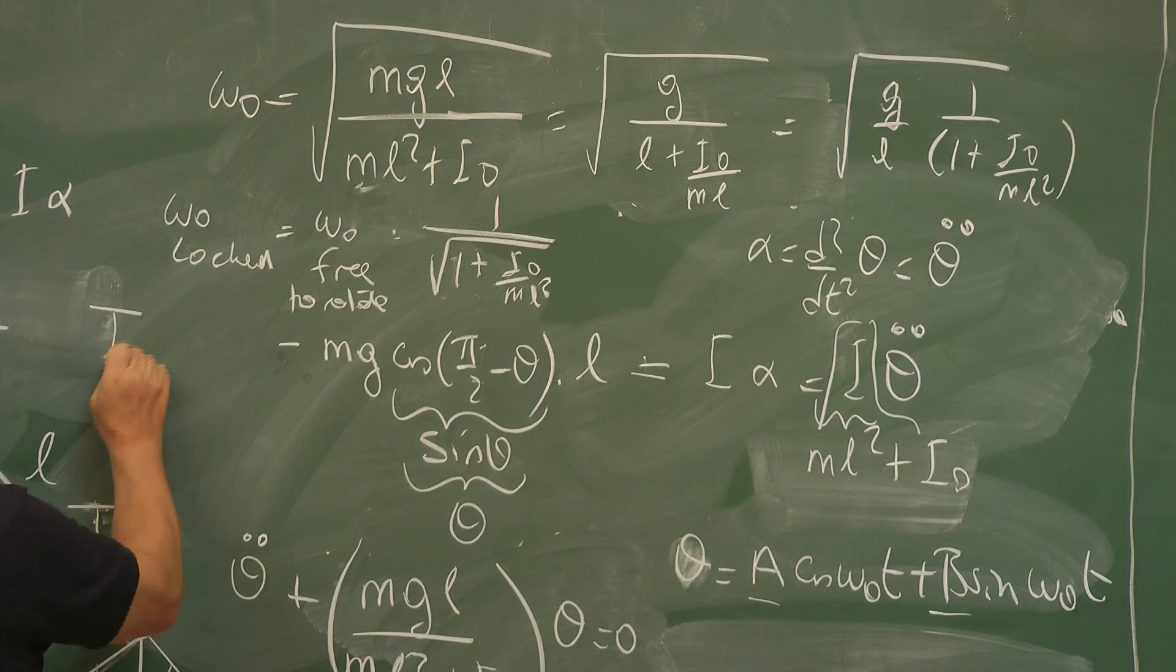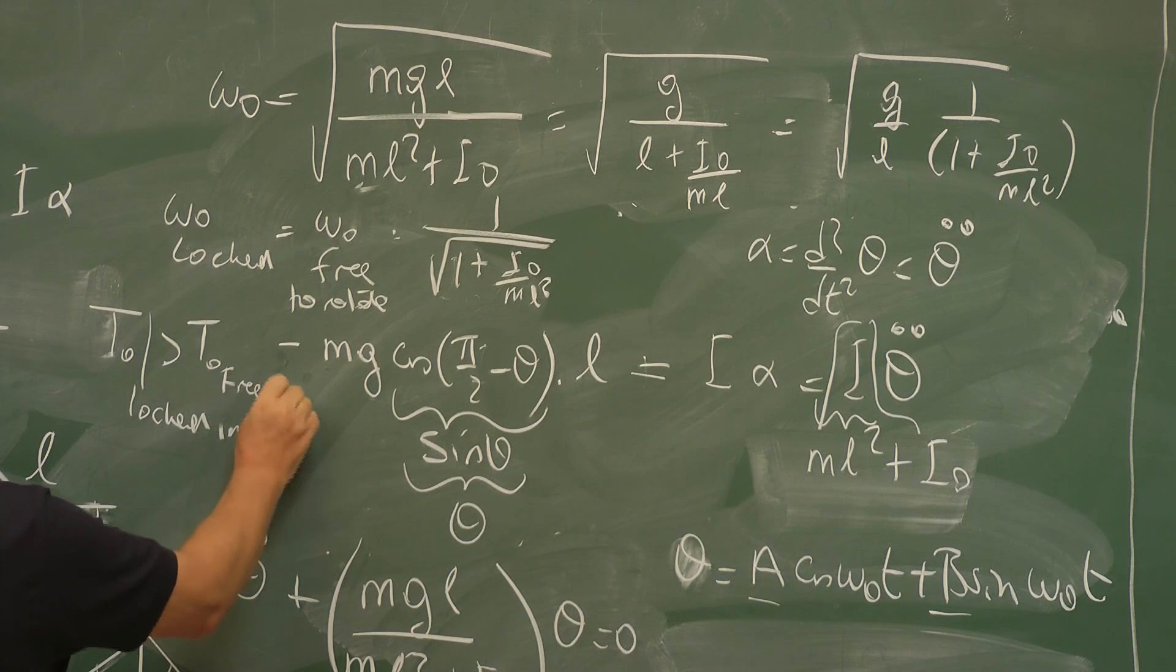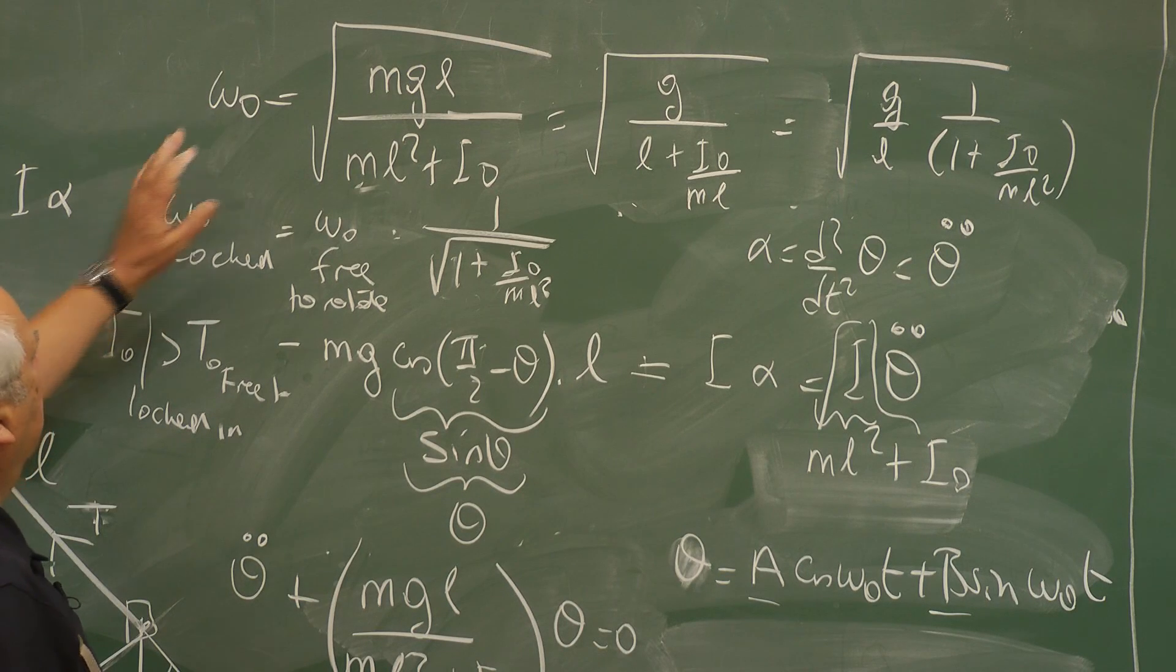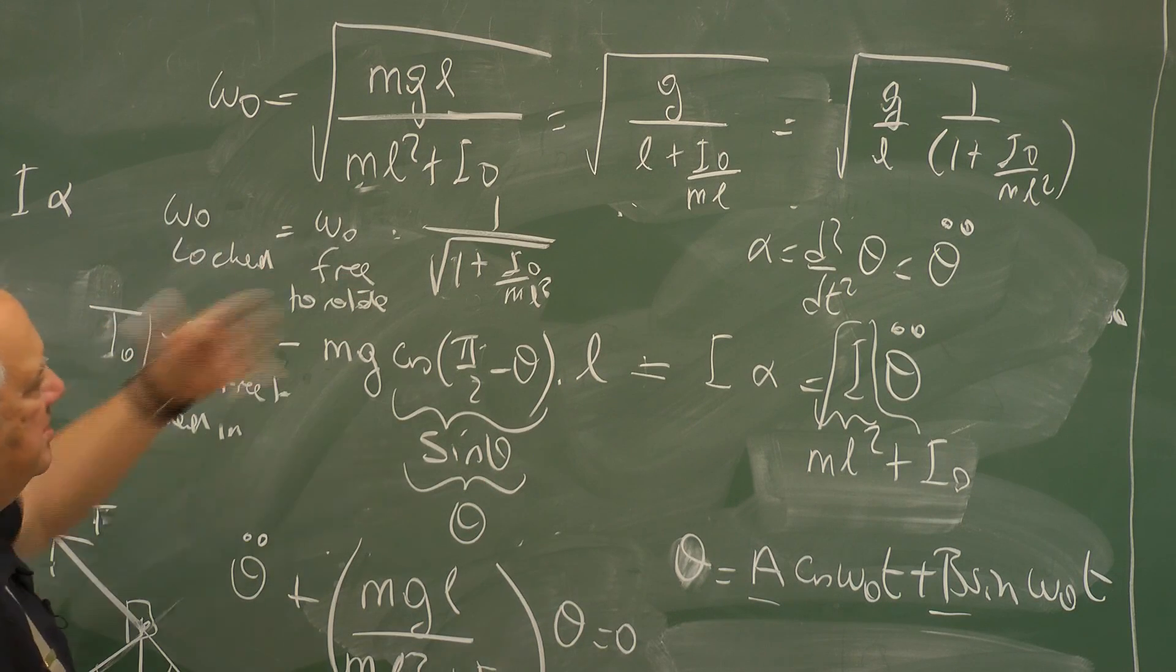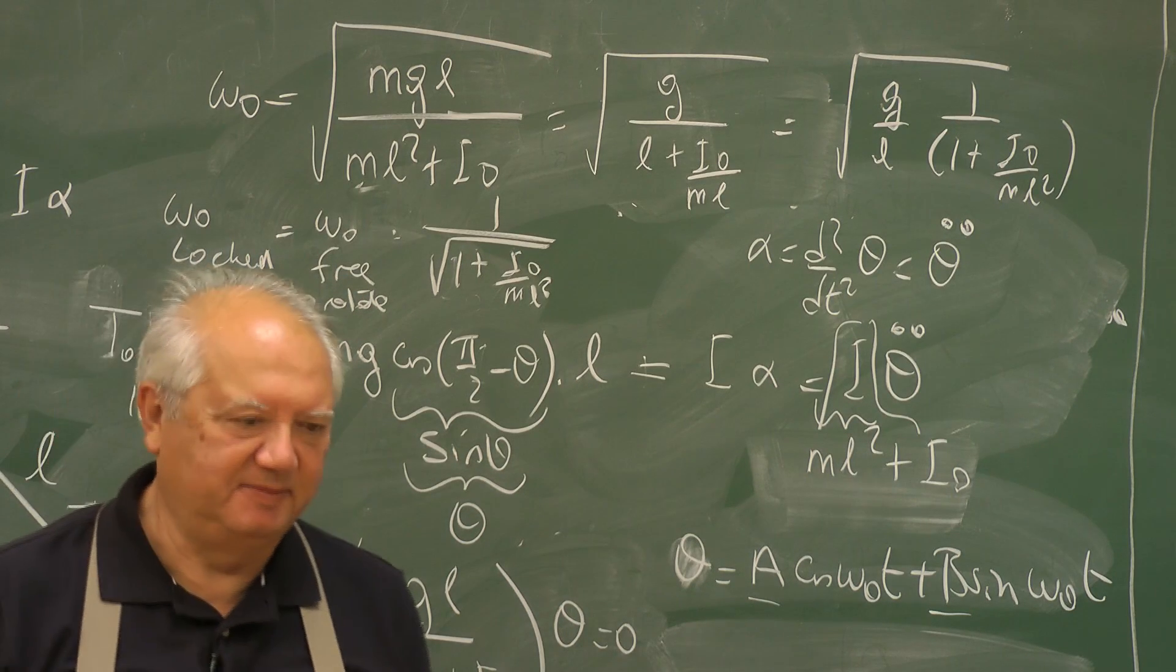So omega zero locked is equal to omega zero free to rotate times this factor. So the frequency is larger when it's free to rotate, whereas the period is larger when it's locked in. All right. Thank you.